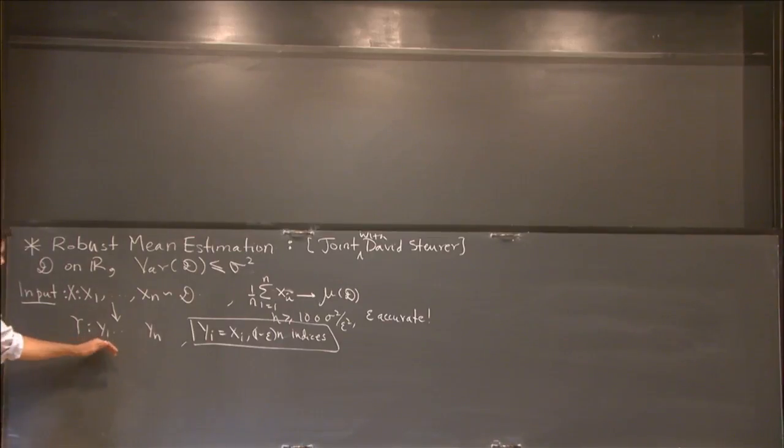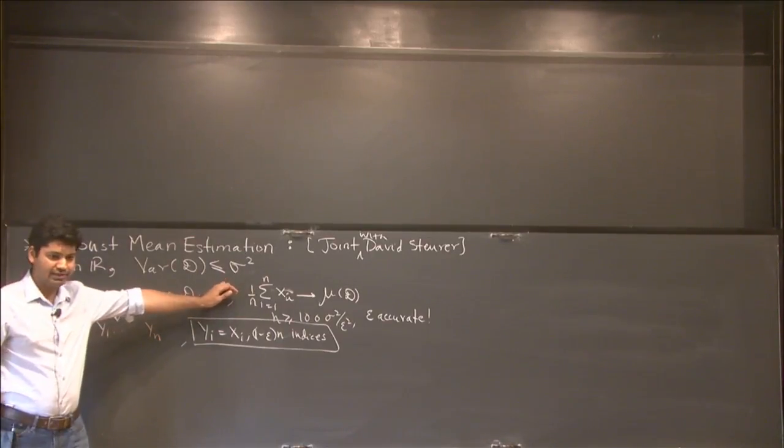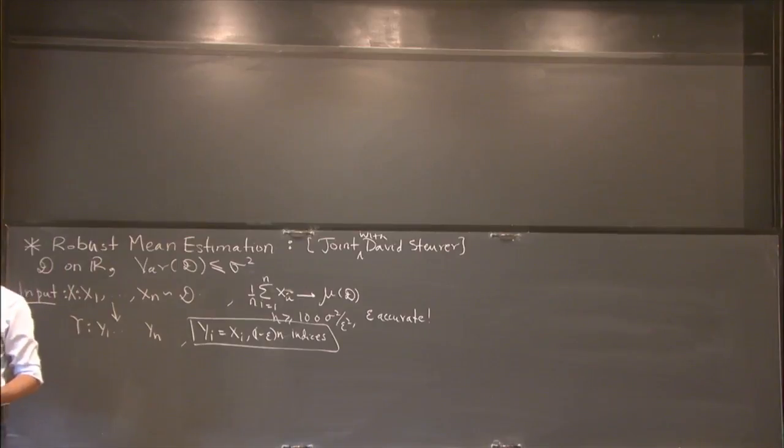Your goal is still to estimate the mean of the distribution D. If you try to do the same trick that we know works in the basic case, then we are going to fail miserably, because if the adversary even has control of one sample, they can push you as far away from the mean as they want. So we can't quite do empirical mean estimation. There is some basic non-triviality involved in this problem. This is what I want to think of as an example of statistical estimation problems.